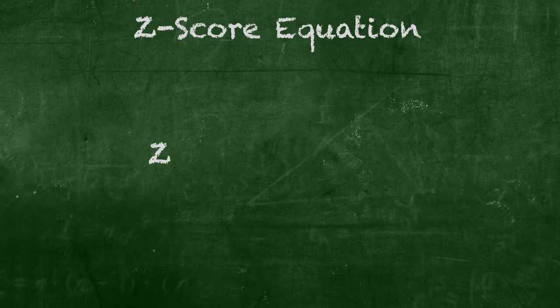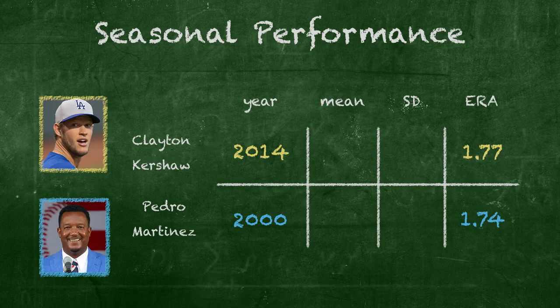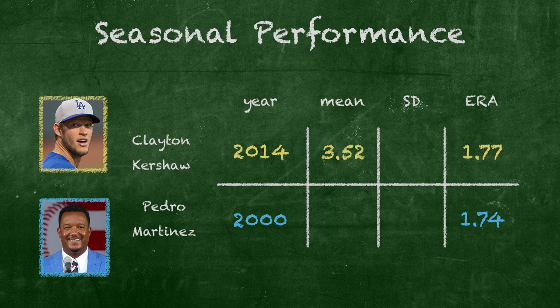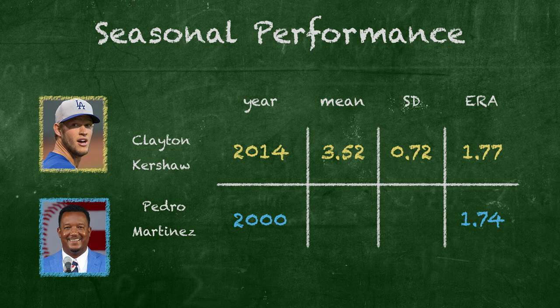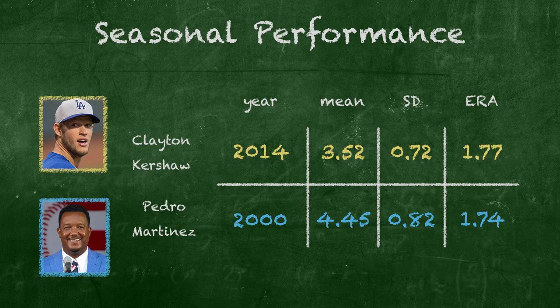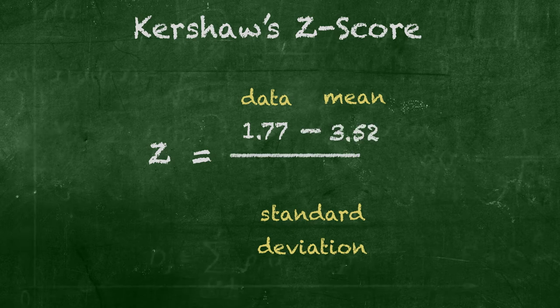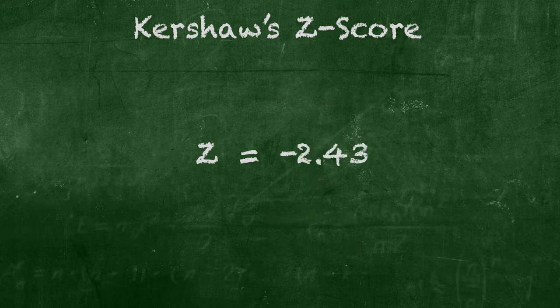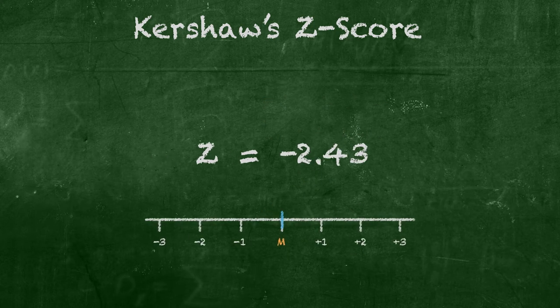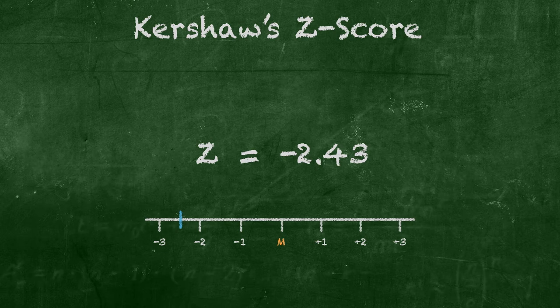Show me the math. We can find the Z-scores by subtracting the mean from the data and then dividing it by the standard deviation. In 2014, the mean ERA was 3.52, while the standard deviation was 0.72. In 2000, the mean ERA was 4.45, while the standard deviation was 0.82. So that means Clayton Kershaw's Z-score was 1.77 minus 3.52, all divided by 0.72, which is negative 2.43. Kershaw's ERA was 2.43 standard deviations below the mean. Since a low ERA is good in pitching, that means it's also good to have a low Z-score, signifying that Kershaw's performance is way better than average.